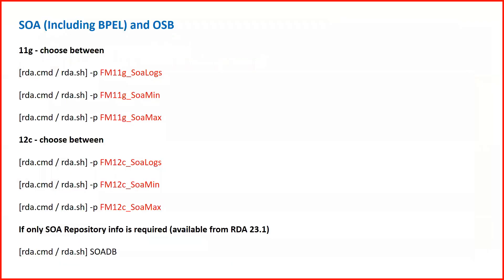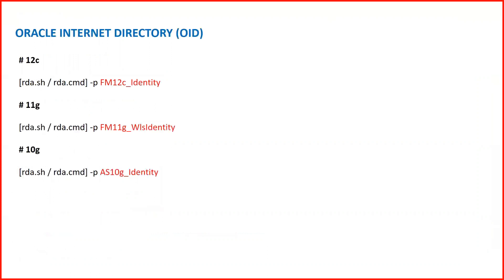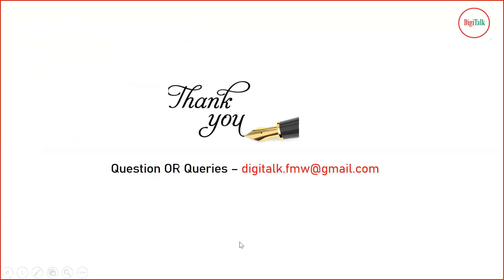This tool can also be run for other Fusion Middleware products. For SOA, there are profiles for 11g and 12c. For OID, there are profiles for 10g, 11g, and 12c. As explained earlier, run the rda.sh -N profile command to see the corresponding profile name for your specific product, and then run RDA using that profile. Thanks for watching, and stay tuned for more videos.